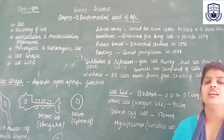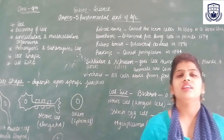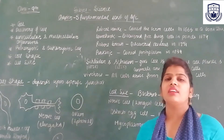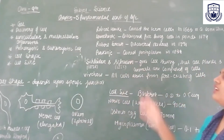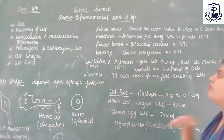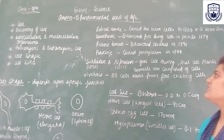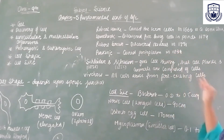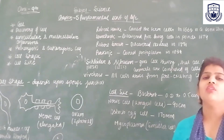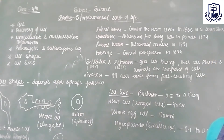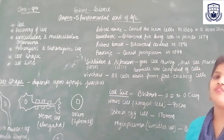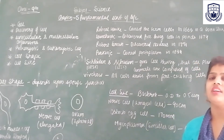उसके बाद आता है discovery of cell. Cell को firstly किस scientist ने discover किया? Robert Hooke — एक scientist जिसने cell को discover किया। उसने firstly cell को एक cork slice में देखा, 1665 में।